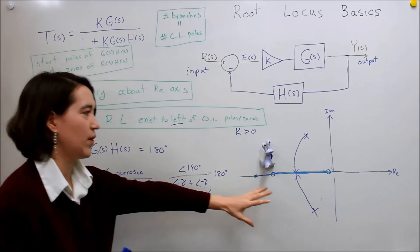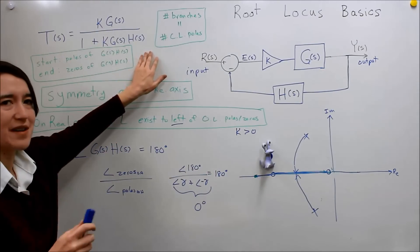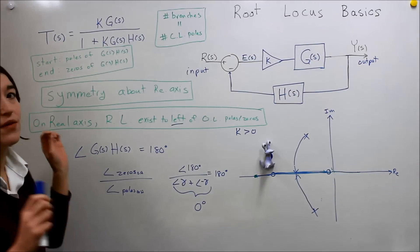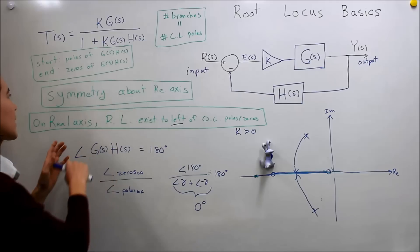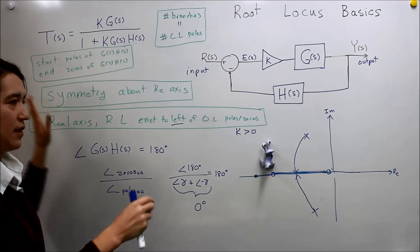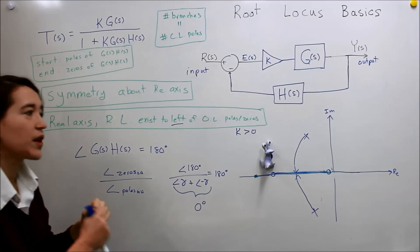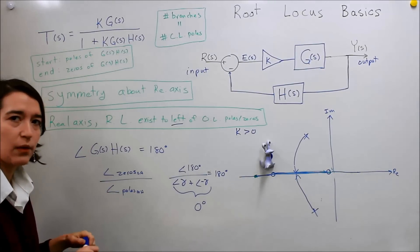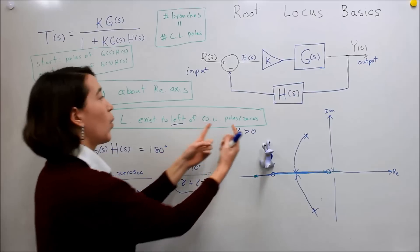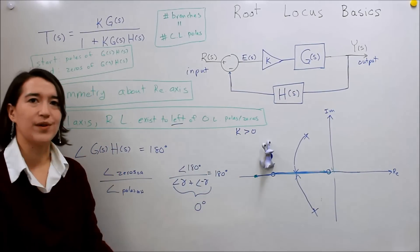Just to review the basic rules: the number of branches is the number of poles; you start at the poles and end at the zeros of the open-loop system G(s)H(s); symmetry is about the real axis; and on the real axis you can automatically draw where the root locus exists, because it will be to the left of an odd number of poles or zeros. We'll do some examples with these, and there's one more rule to cover in the next video.